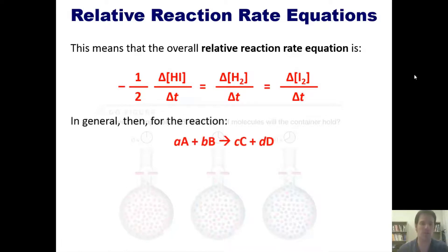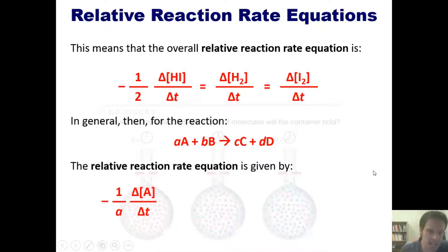So in general then, for a reaction shown here, the relative reaction rate equation is given by negative one over the coefficient A multiplied by delta concentration of A over delta t,